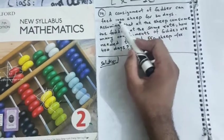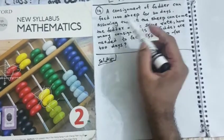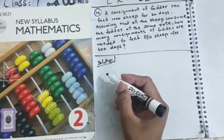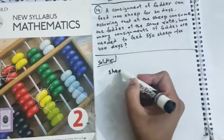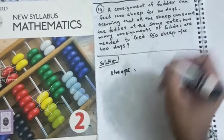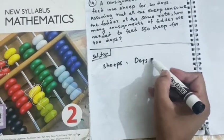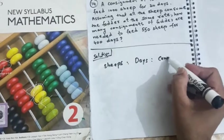A consignment of fodder can feed 1,000 sheep for 20 days. So, three things are mentioned here. Consignment, I shall mention the consignment at the end. Number of sheeps, days, and the consignment, number of consignment.